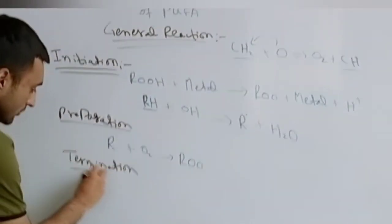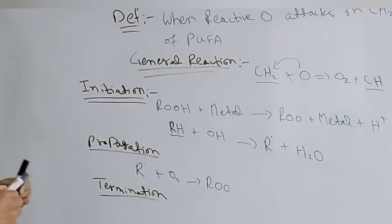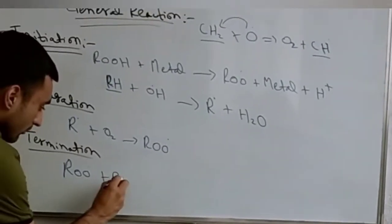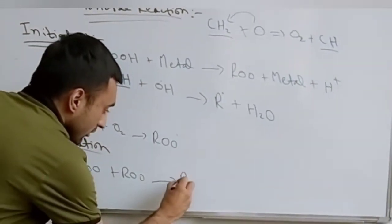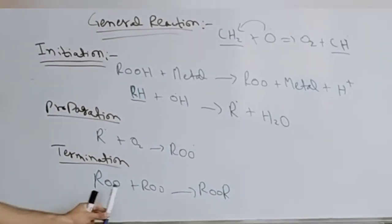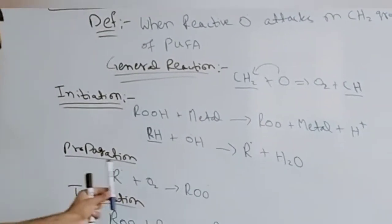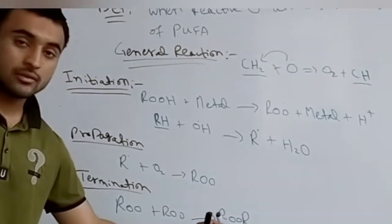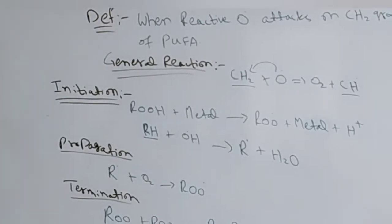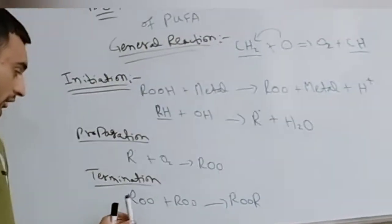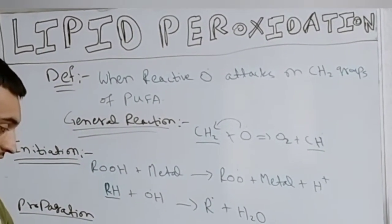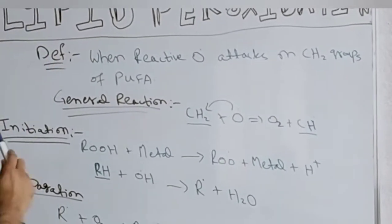The last step is termination. In termination, both free radicals attach to each other to form a stable molecule — R• + R• combine to give a stable product. The important point to keep in mind is that whenever two unstable free radicals combine with each other, they give rise to a stable species.